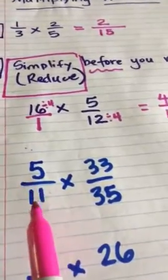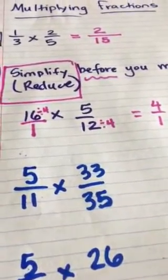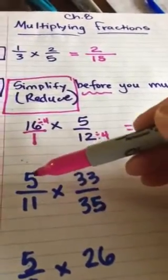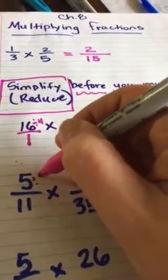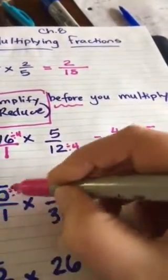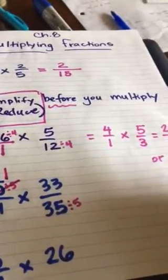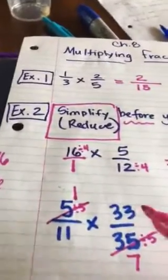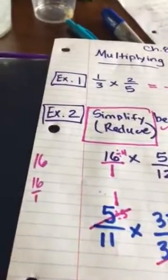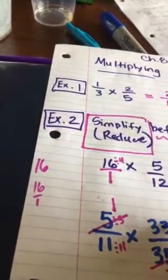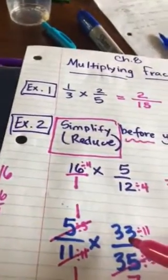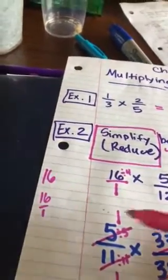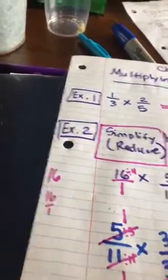Let's look at this next one. We want to multiply 5/11 times 33/35. Can we simplify or reduce before we start? What about 5 on top and 35 on the bottom? We can divide both by 5 — 5 divided by 5 is 1, and 35 divided by 5 is 7. What about 11 and 33? What will go into both? That would be 11. So 11 divided by 11 is 1, and 33 divided by 11 is 3. By reducing first, we go straight to our answer: 1 times 3 is 3, and 1 times 7 is 7 — so 3/7.